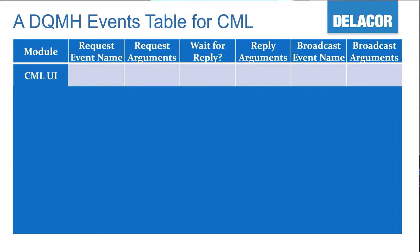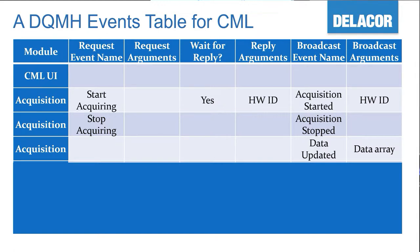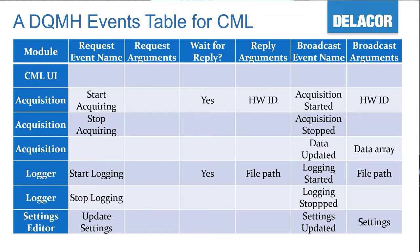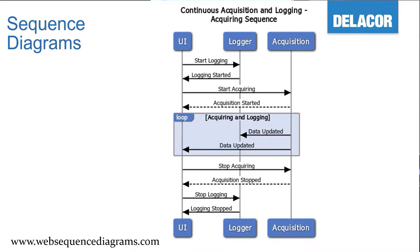We need a message to start acquiring and stop acquiring, with no need for arguments. One thing we've been doing more and more: anything that has to do with connection or starting something, we make it a request-and-wait-for-reply, because if you're not connecting, there's no need to keep sending requests. For the logger, we would have start logging, stop logging, and the settings editor. Another modeling technique is to use sequence diagrams — one for the initialization sequence and one for continuous acquisition.